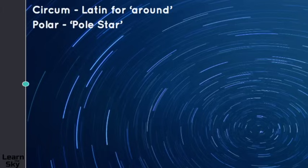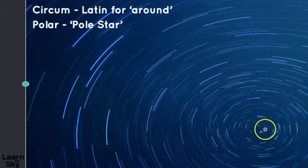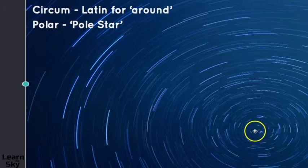Let's break this word down. The word circum is Latin for around, and polar comes from the pole star. All the circumpolar constellations circle around the pole star, which is also named Polaris.